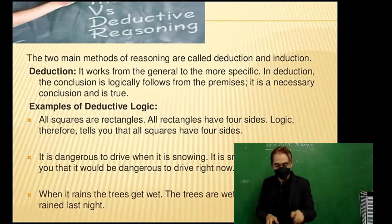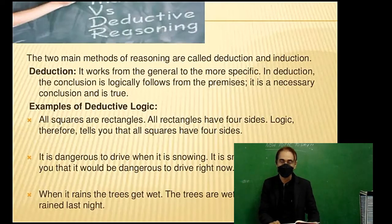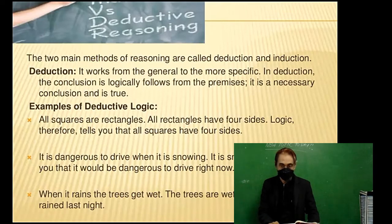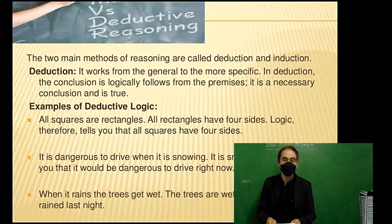Examples of deductive logic: All squares are rectangles. All rectangles have four sides. Logic therefore tells you that squares have four sides. Another example: It is dangerous to drive when it is snowing. It is snowing now. Logic tells you that it would be dangerous to drive right now. A third example: When it rains, the trees get wet. The trees are wet this morning, so it rained last night.